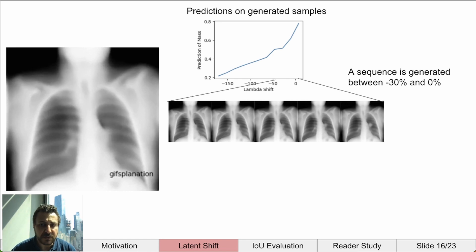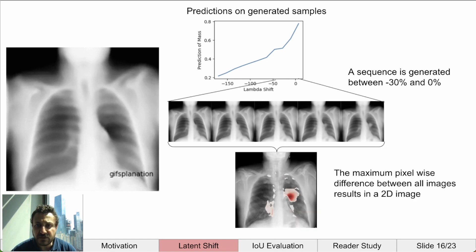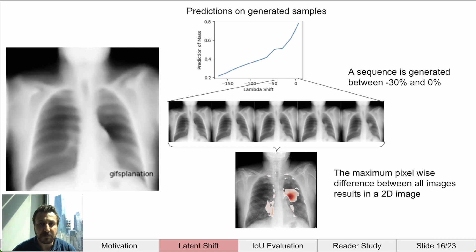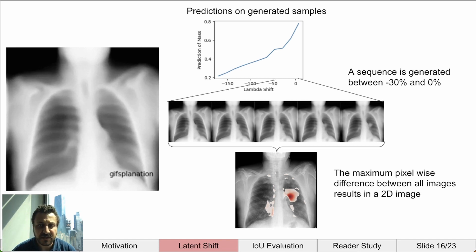From this sequence, we can construct a 2D image, which is similar to the traditional attribution map, by taking the maximum pixel-wise difference between every image and the unperturbed reconstruction. There are some other approaches for this, but the ones we tried all work about the same.